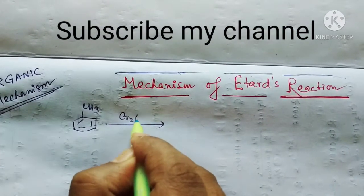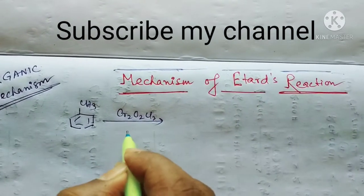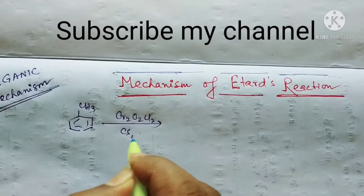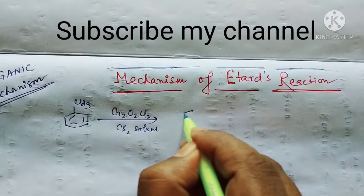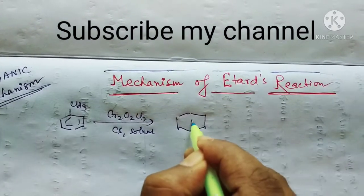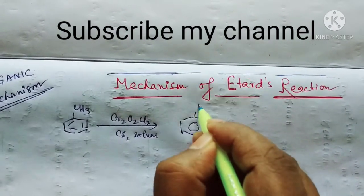CrO2Cl2 in CS2 solvent converts first into this compound, an intermediate compound.